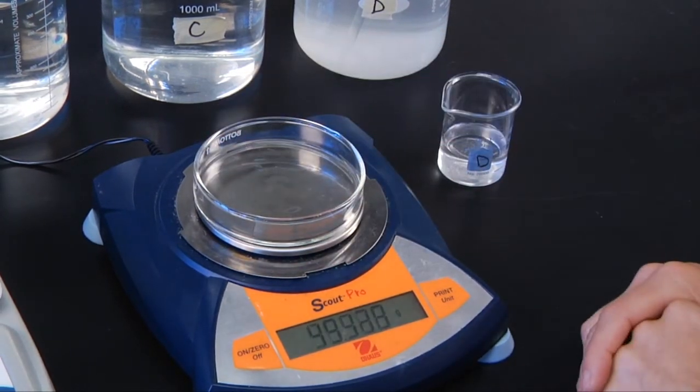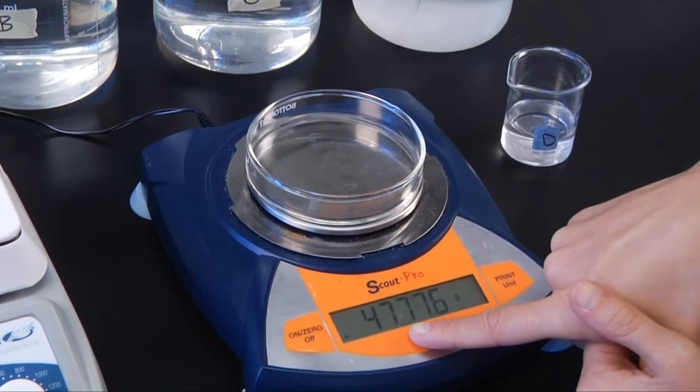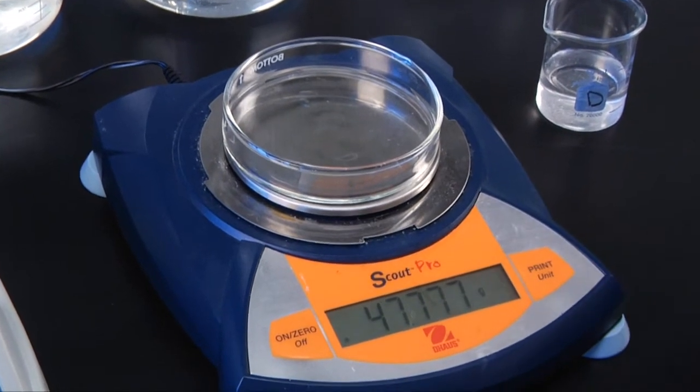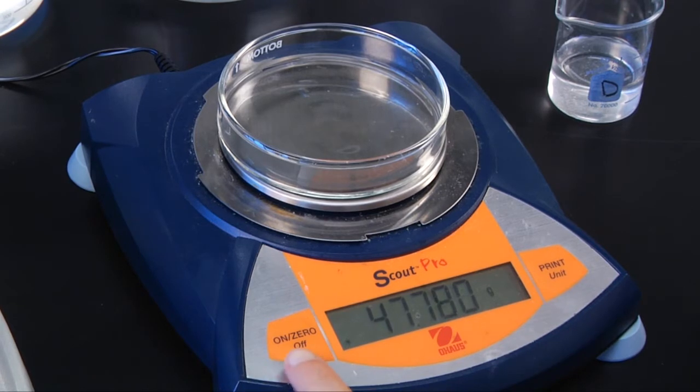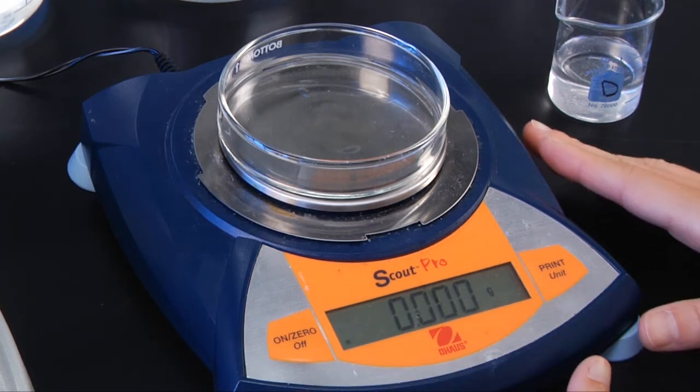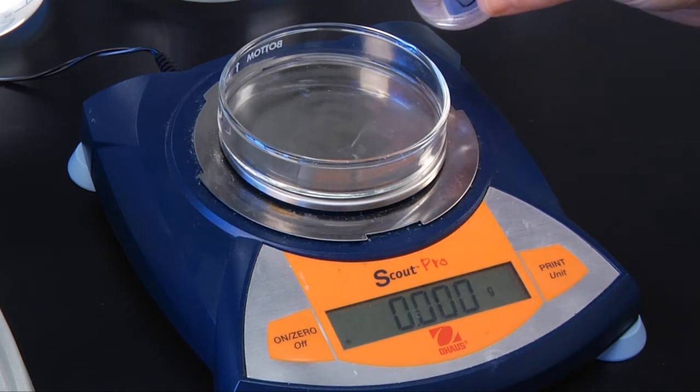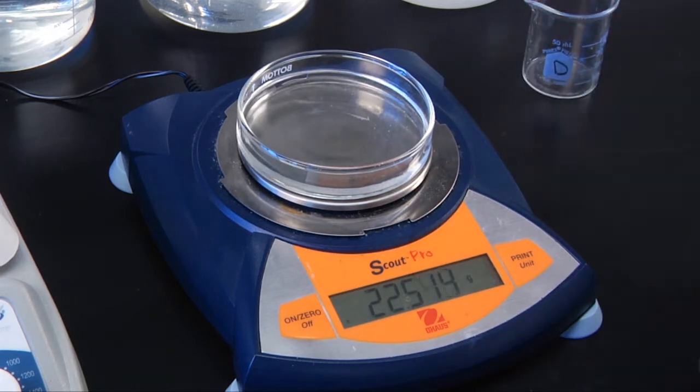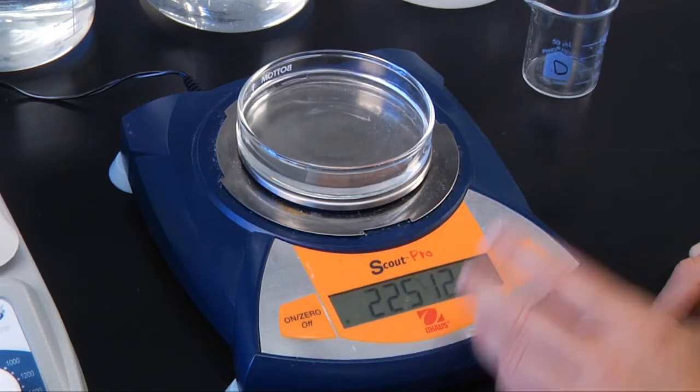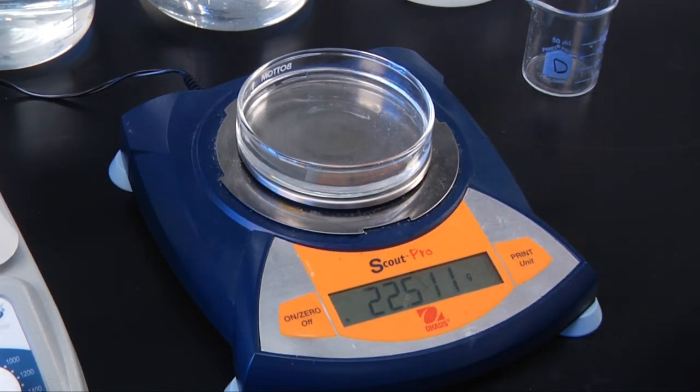Put your petri dish right on top. Let it come to an equilibrium. Make sure you write that weight down just in case your scale gets turned off. So write that number down and then you can hit the zero button again. And now this machine has recorded the weight of that petri dish. So now all it's going to weigh is the water that we are going to pour into it. Once this comes to equilibrium again, then you'll write this number down. That's going to be the weight of your water and the salt that's in that water. Make sure you record that number as well.